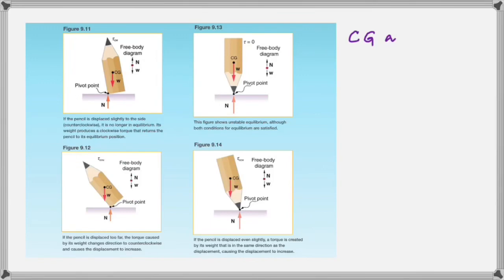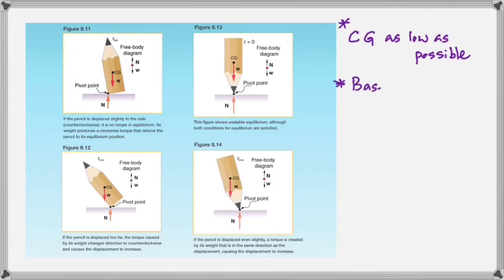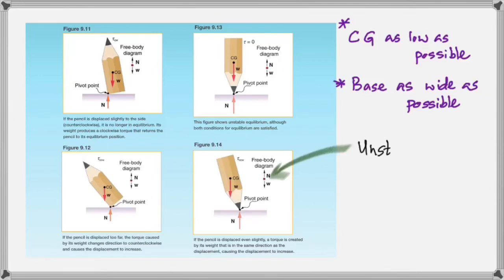If you try to balance a pencil on its tip, you won't succeed because the base is so tiny it's impossible for the vertical line to stay within it — that's unstable. To make an object stable, two things are needed: number one, the center of gravity must be as low as possible; number two, the base must be as wide as possible.